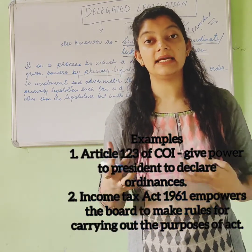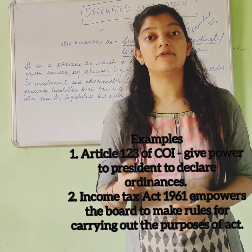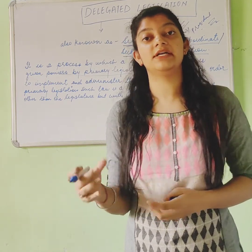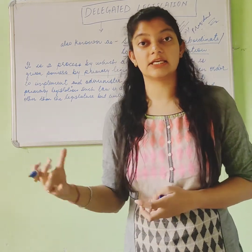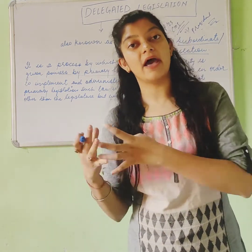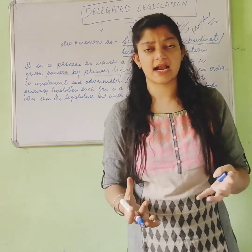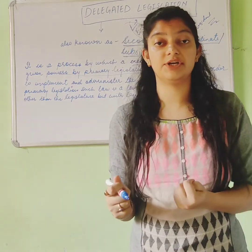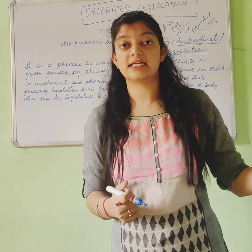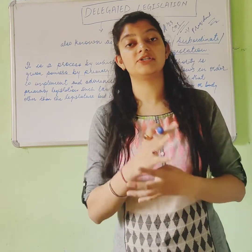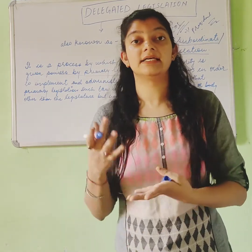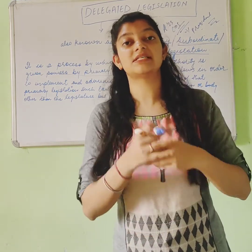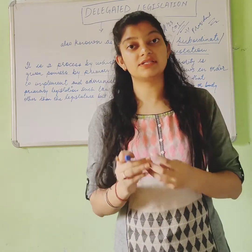For example, the Income Tax Act of 1961 gives power to the central government to delegate power to the CBDT — the Central Board of Direct Taxes — in which they can act on searches, seizures, penalties, defaults, and similar matters.